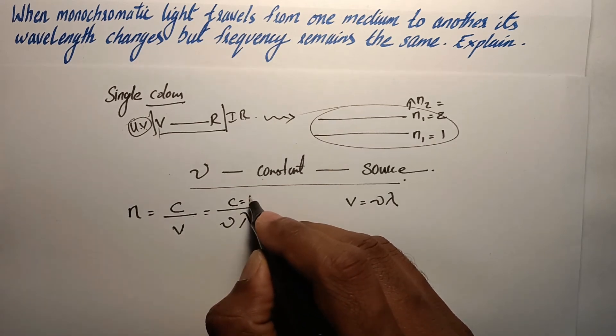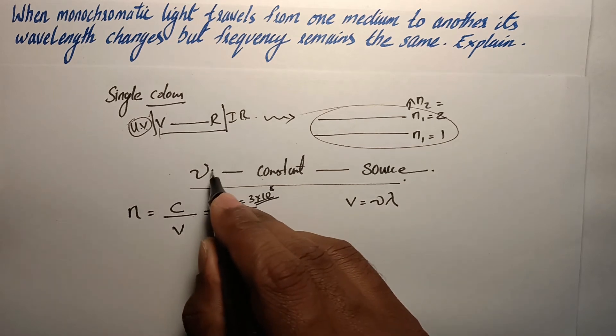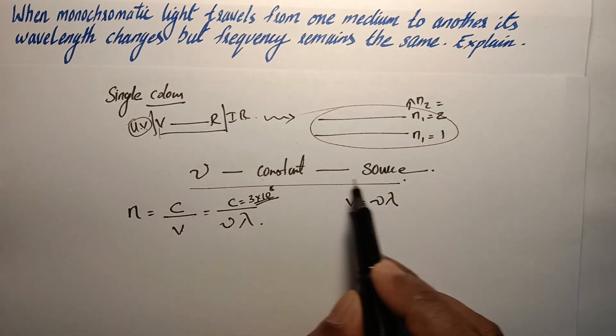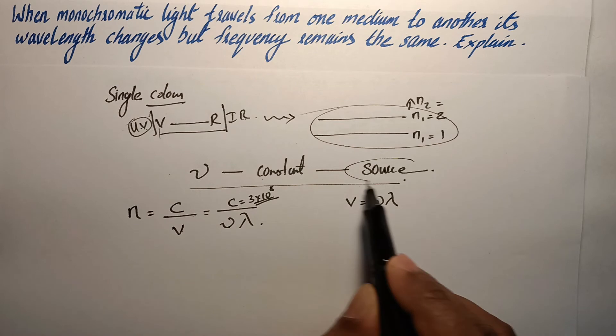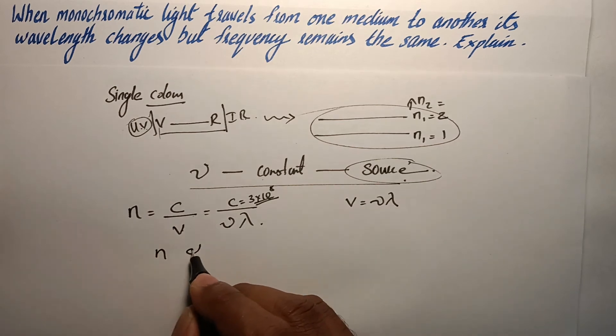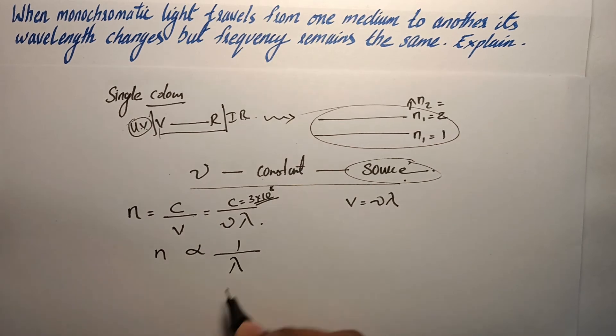We know that the value c is 3 into 10 raised to 8, it is a constant, and frequency is a constant because it is set by the source. So refractive index is inversely proportional to wavelength.